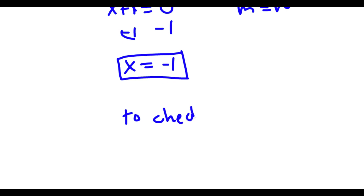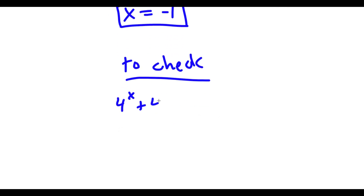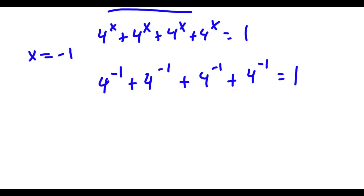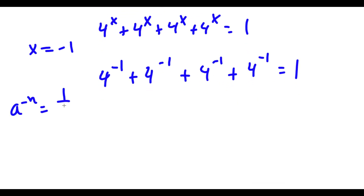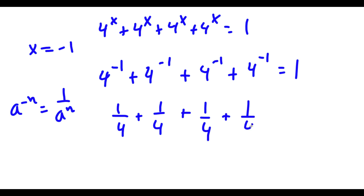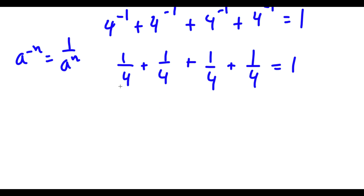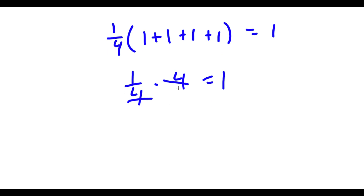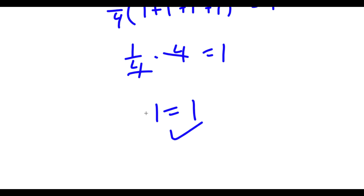Now to check, my original equation was 4 to the power of x plus 4 to the power of x plus 4 to the power of x plus 4 to the power of x is equal to 1. We know that x is equal to negative 1, so plugging that in, I get 4 to the power of negative 1 plus 4 to the power of negative 1 plus 4 to the power of negative 1 plus 4 to the power of negative 1 is equal to 1. Now since a to the power of negative n equals 1 over a to the power of n, 4 to the power of negative 1 equals 1 over 4. So I have 1 over 4 plus 1 over 4 plus 1 over 4 plus 1 over 4 equals 1. Factoring out 1 over 4, I get 1 over 4 times 4 equals 1, so these two cancel out and I'm left with 1 is equal to 1. And because this is right, our solution is right.